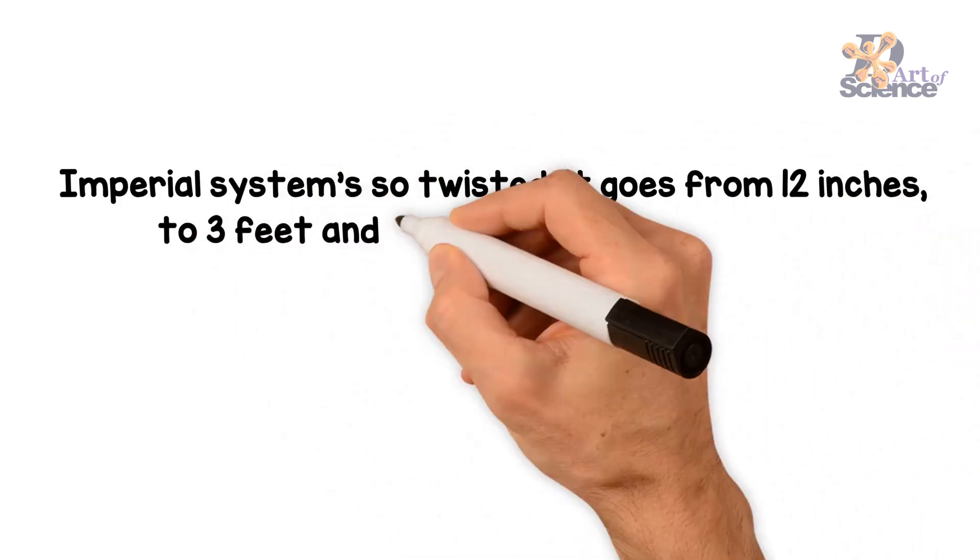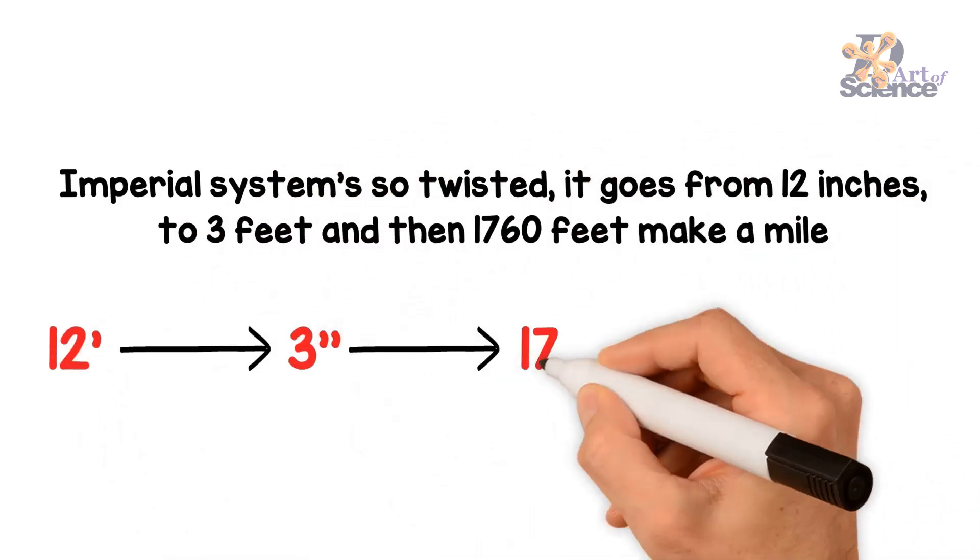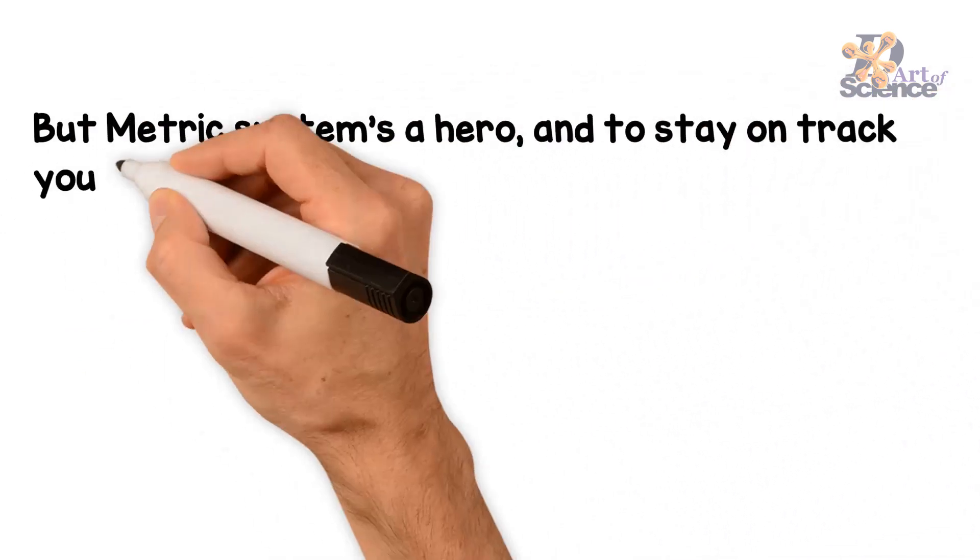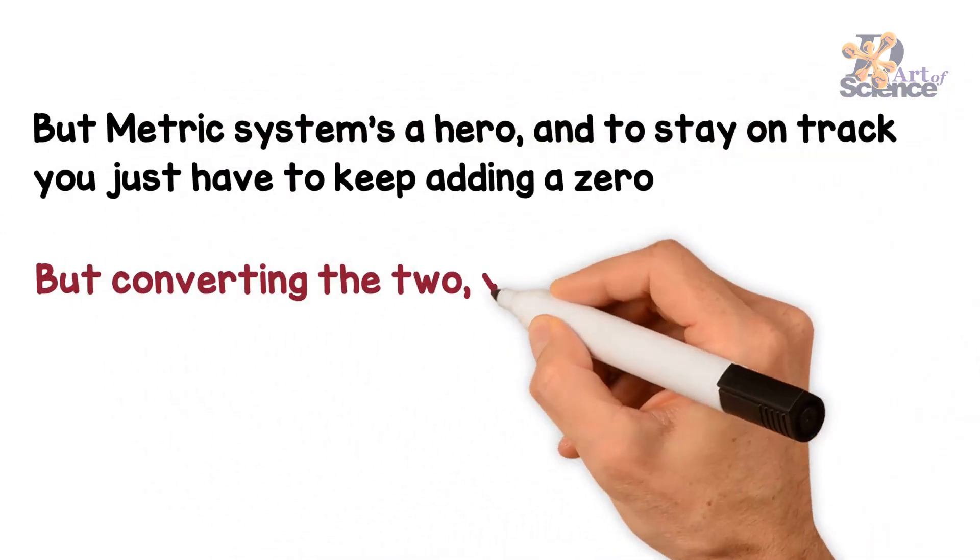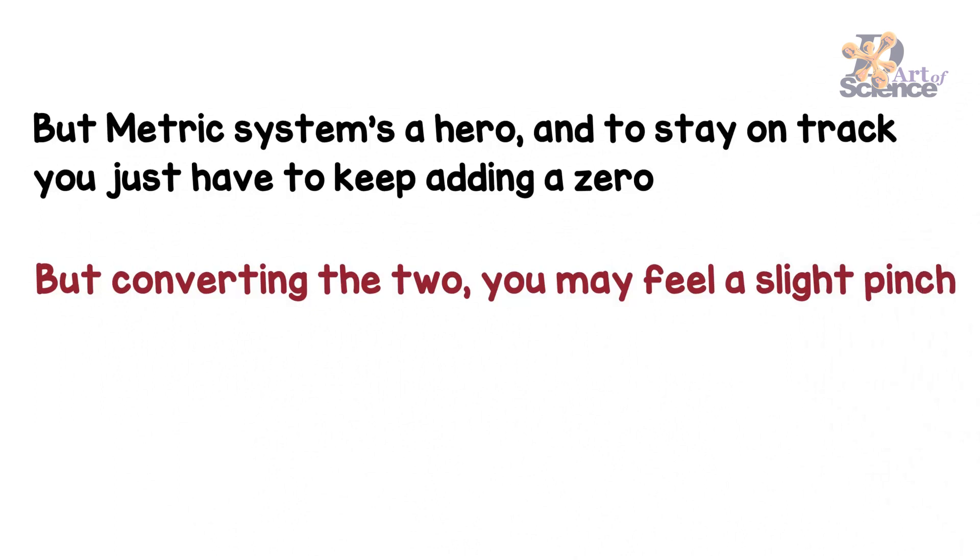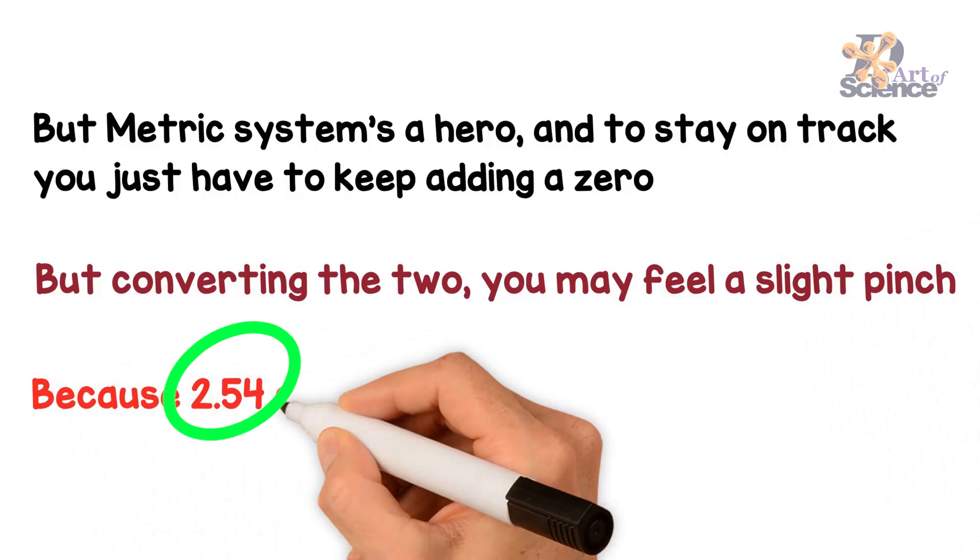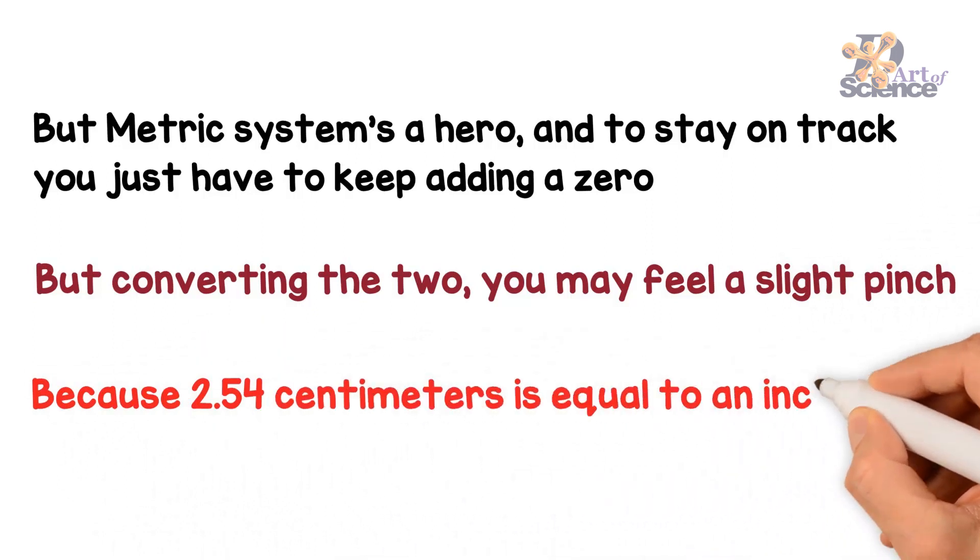Imperial Systems so twisty. Going twelve and three and then a seventeen to sixty. But metric systems a hero. To stay on track just keep adding a zero. But converting the two, you may feel a slight pinch. 2.54 centimeters is equal to an inch.